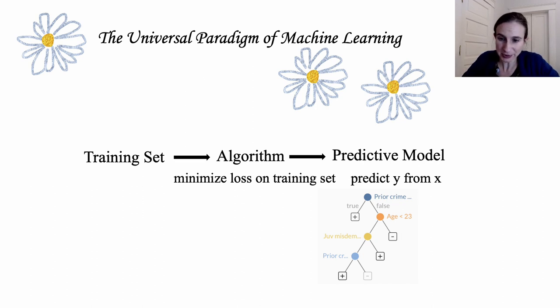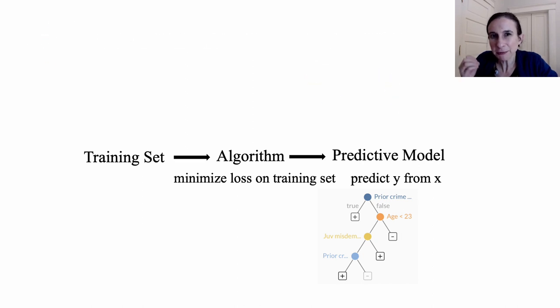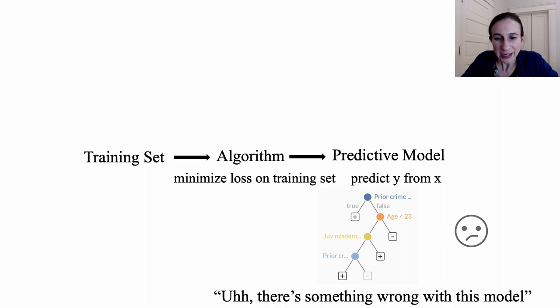Ideally the model is interpretable so that a domain expert could critique it. Now we use this general paradigm for essentially all machine learning applications, but there's a problem with it. It's fundamentally flawed and we should really reconsider for high-stakes decisions. When you produce an interpretable model that's designed to be critiqued, domain experts will criticize it and say I think something's wrong with this model, is there another model that I could choose instead? And if the algorithm only produces one model, there's nothing you can easily do to fix it.